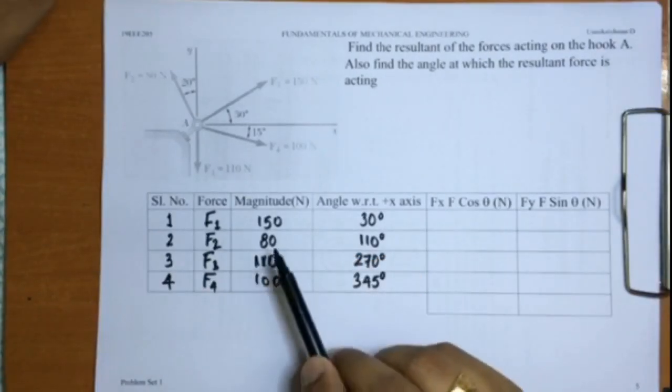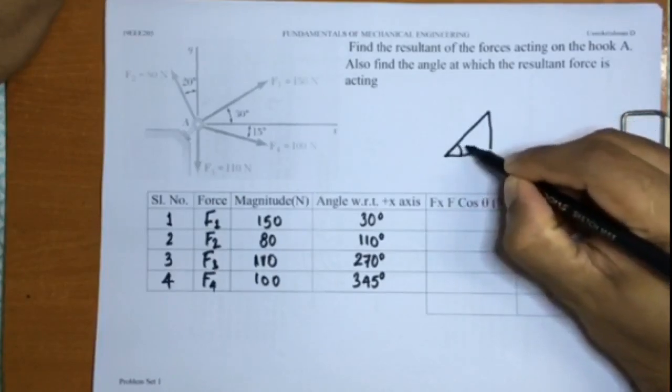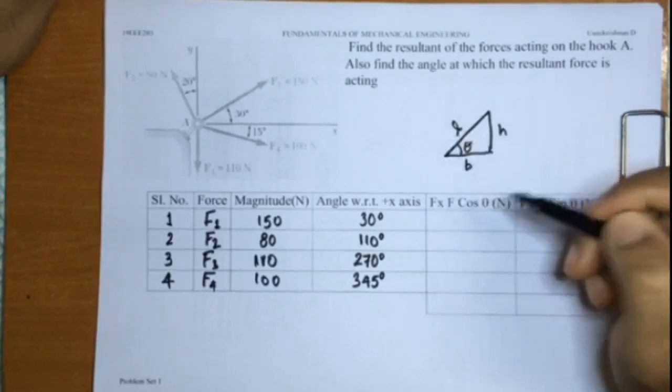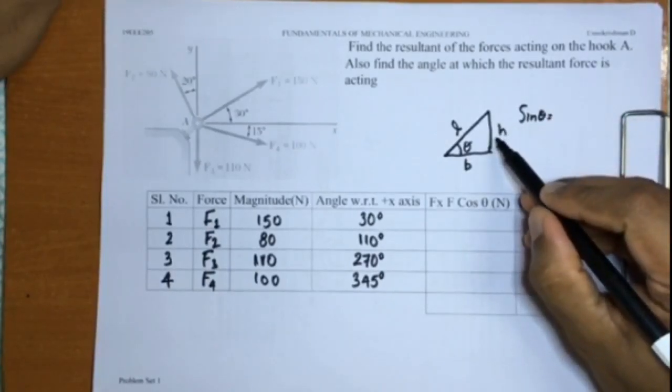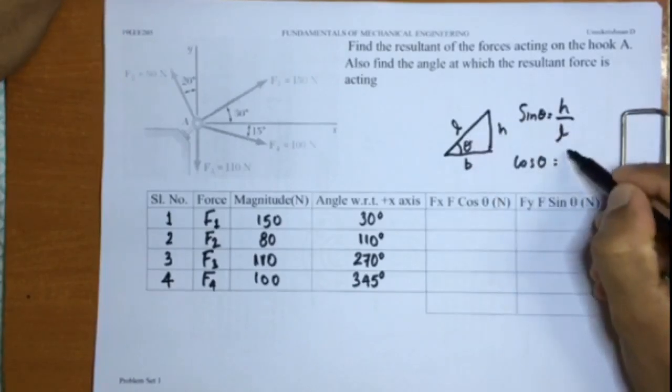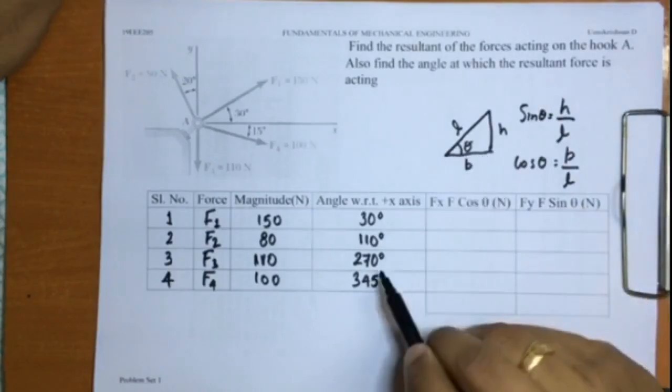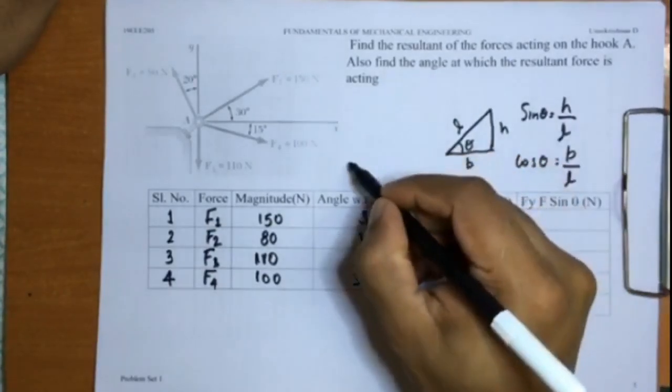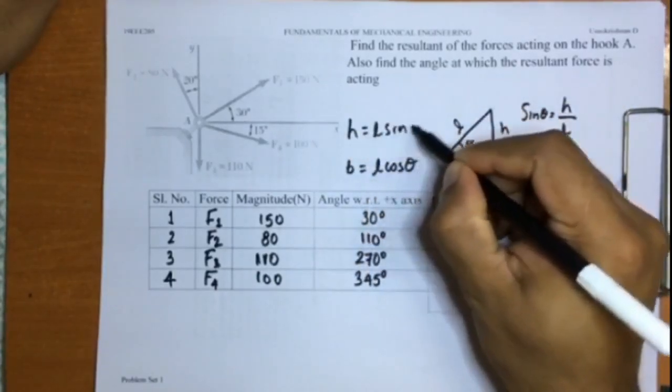Now you just have to find out the Fx and Fy components. Take a simple triangle: if I have an angle theta defined like this, let this be the base, this be the height, and this be the hypotenuse L. What is sin theta? Sin theta is opposite side by hypotenuse, so h by L. And what is cos theta? It will be b by L, that is adjacent side by hypotenuse. In that case, if I want to find the length b, all that I have to do is multiply the hypotenuse with cos theta. So I can say b is equal to L cos theta, and similarly the height h is equal to L sin theta.